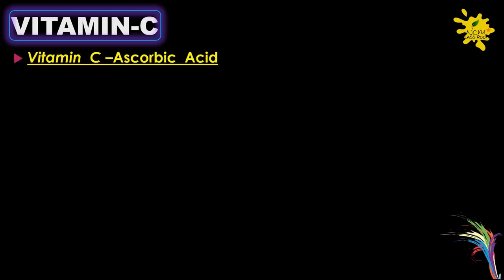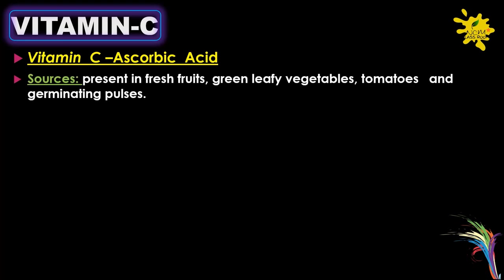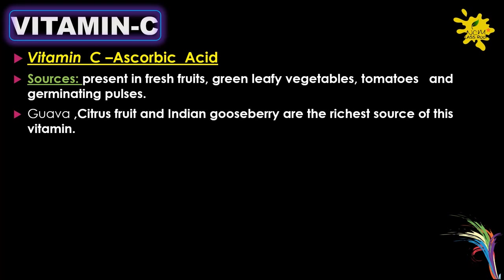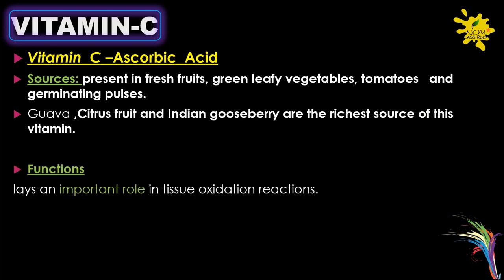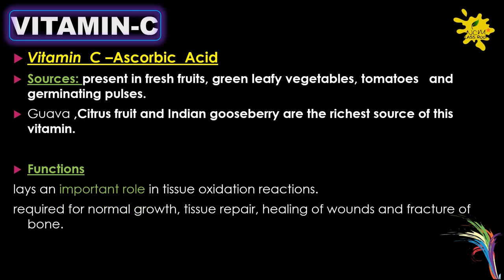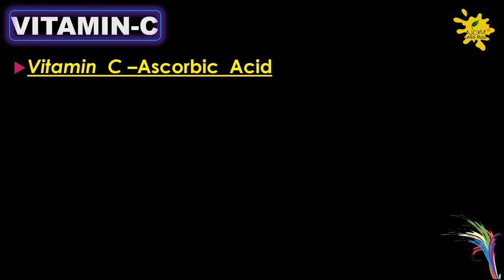Vitamin C: the chemical name is ascorbic acid. Sources include fresh fruits, green leafy vegetables, tomatoes, and germinating pulses. Guava, citrus fruits, and Indian gooseberry are the richest sources. Vitamin C plays an important role in tissue oxidation reactions and is required for normal growth, tissue repair, healing of wounds, and fracture of bone.